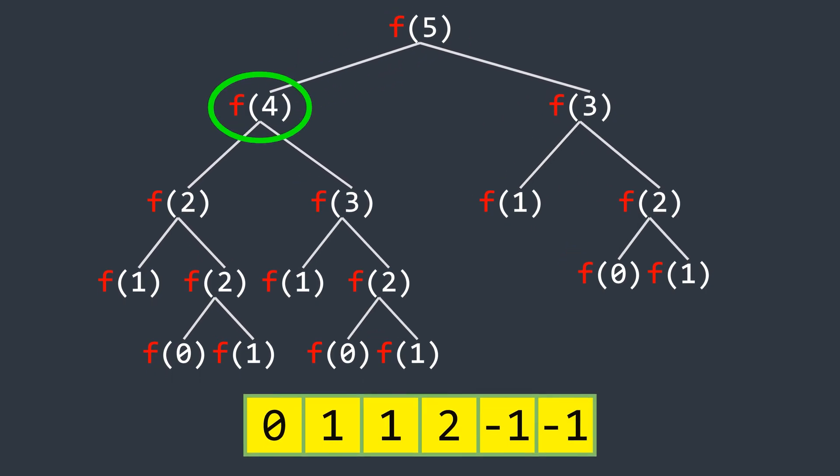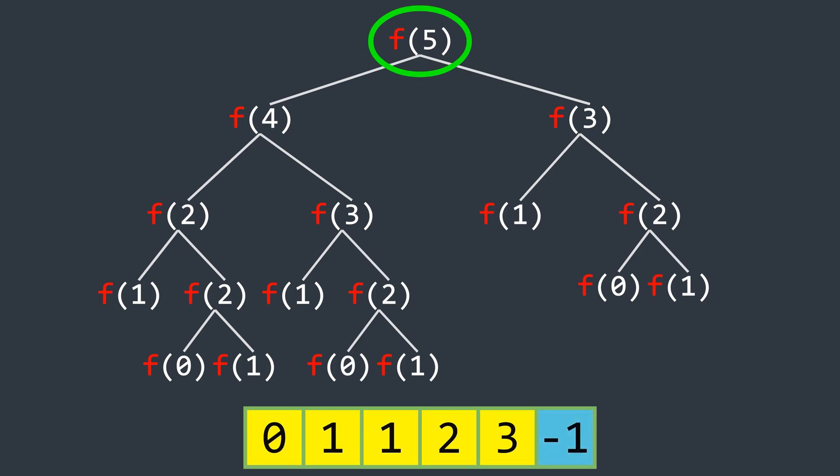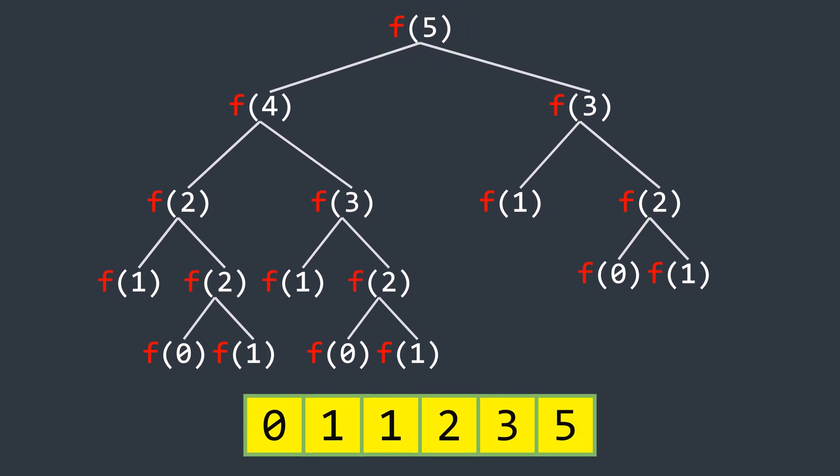But here's the optimization. We don't need to recompute f of 3 and f of 2 again, because they are already stored in the array. We simply retrieve their values and compute f of 4, which is 3 here, and store it at the index 4. Finally, we compute f of 5 by adding the values of f of 4 and f of 3, which is 5 here.